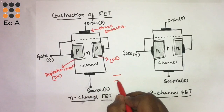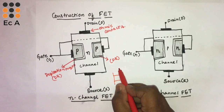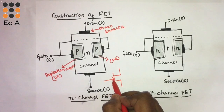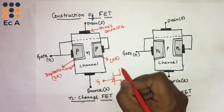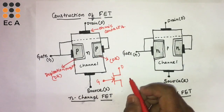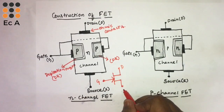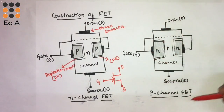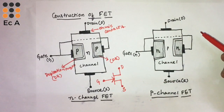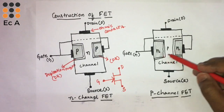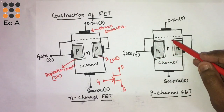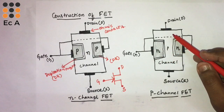Now we will see the symbol of FET. The symbol has three terminals — the arrow mark is pointing inside, and the terminals are gate, drain, and source. For the P-channel FET, the construction is the same but the difference is we have two N-type semiconducting materials connected to the gate, and the channel is made up of P-type semiconducting material.